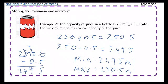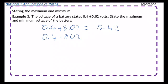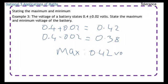Okay, number three: the voltage of a battery states 0.4 plus or minus 0.02 volts. State the maximum and minimum voltage of the battery. And again, pretty straightforward - you just add on and take away. So 0.4 plus 0.02, 0.4 take away 0.02, so 0.42 and 0.38. So maximum is 0.42 volts and minimum is 0.38 volts.